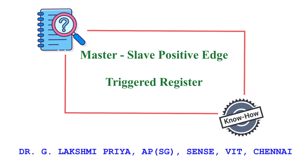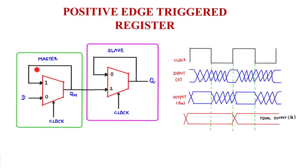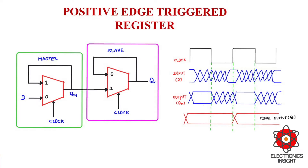The master-slave configuration is basically constructed by cascading a positive and a negative latch. This is the typical implementation of a positive edge-triggered register based on a master-slave configuration. The register is built by cascading a negative latch as the master with a positive latch as the slave.